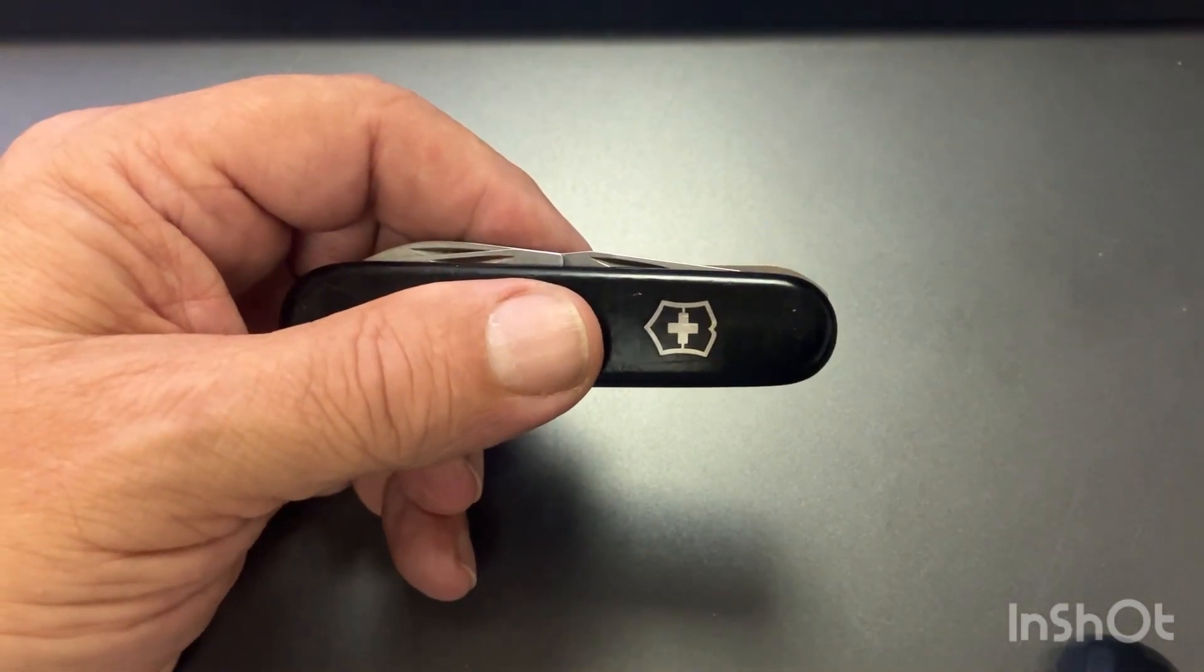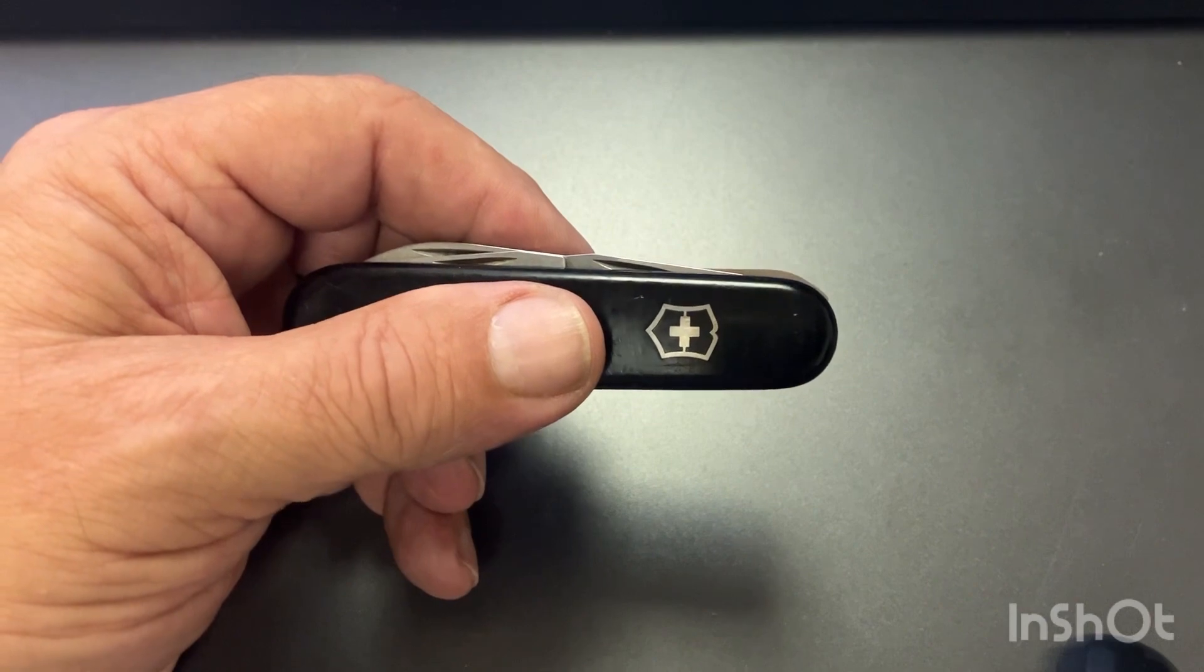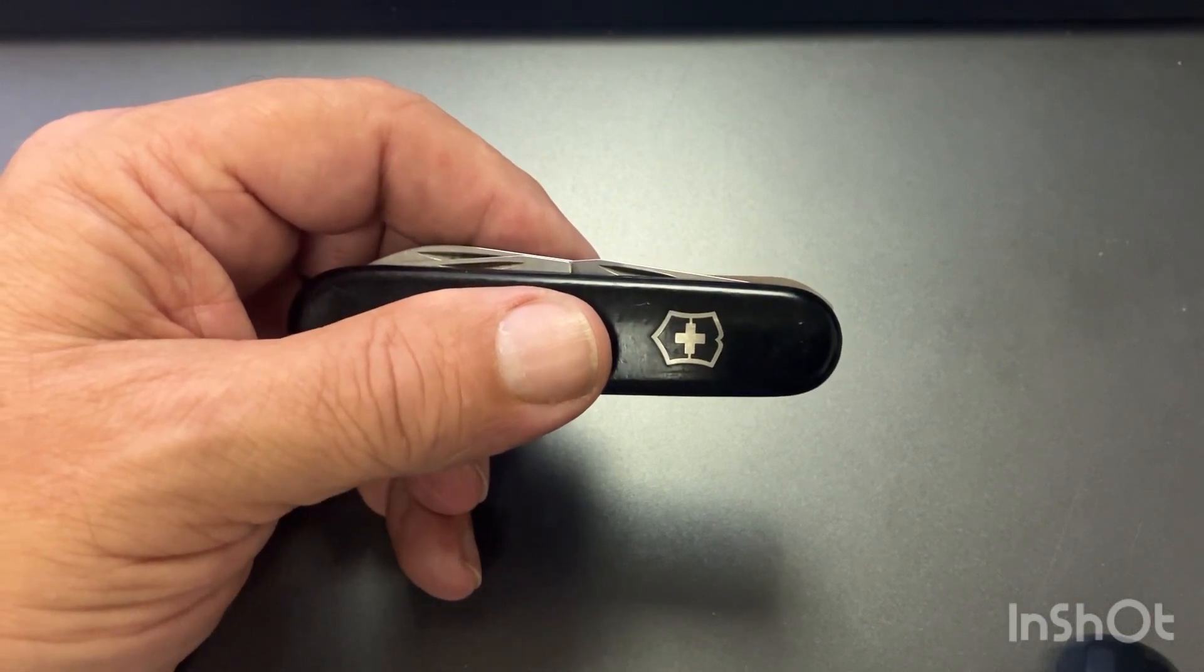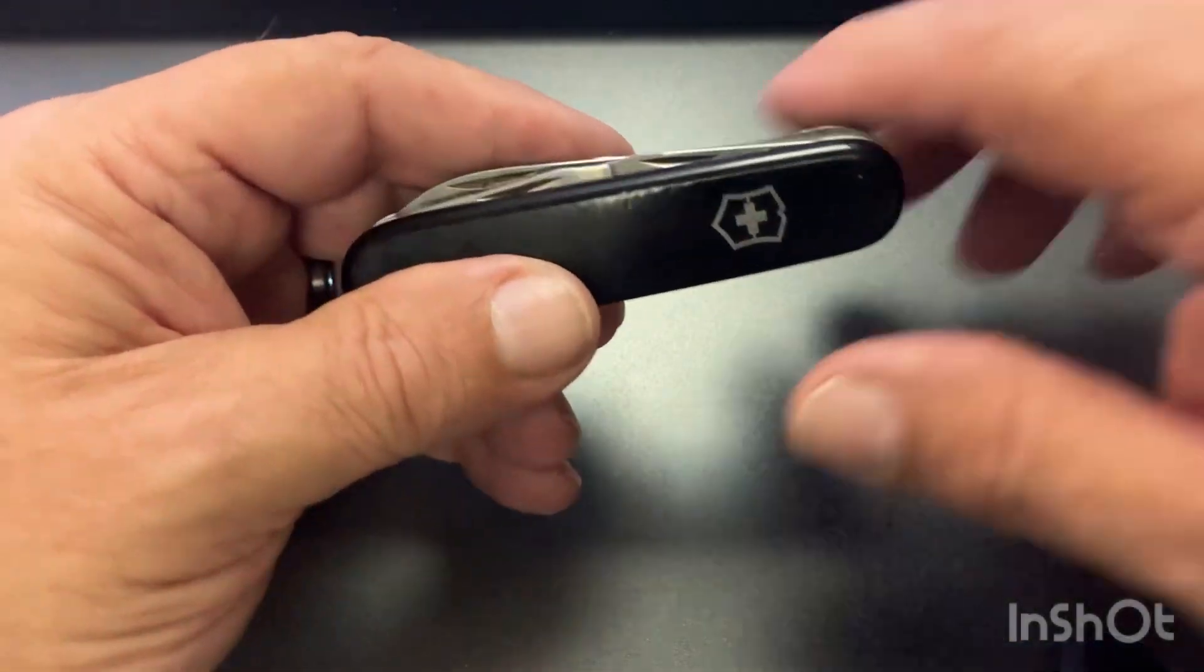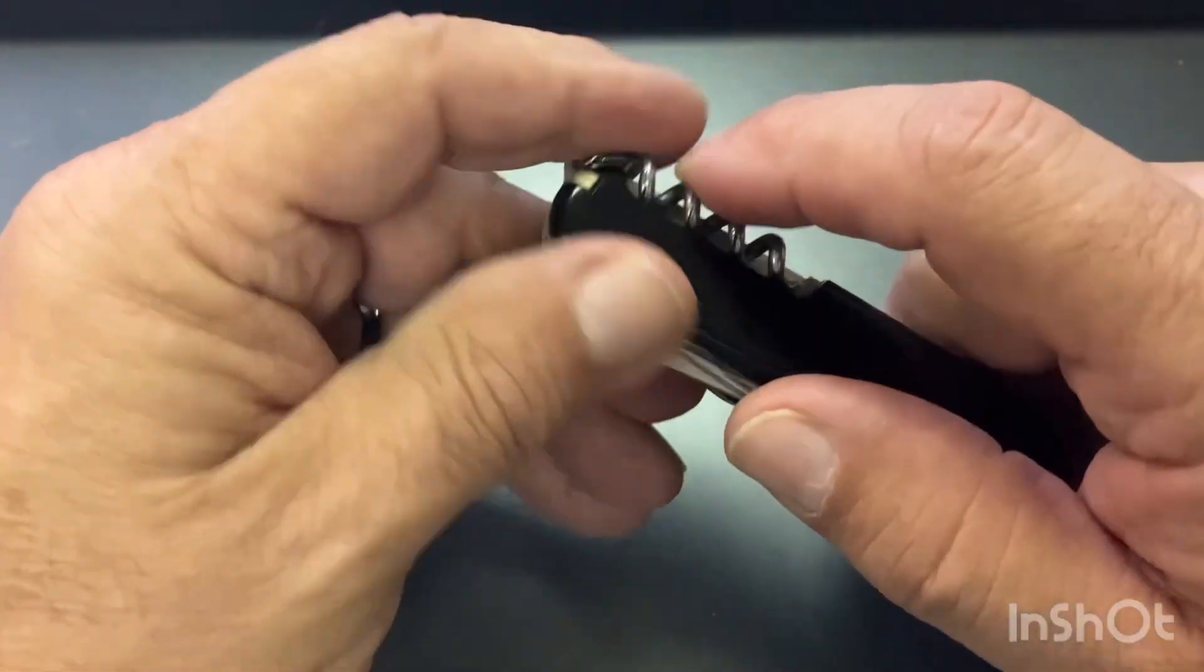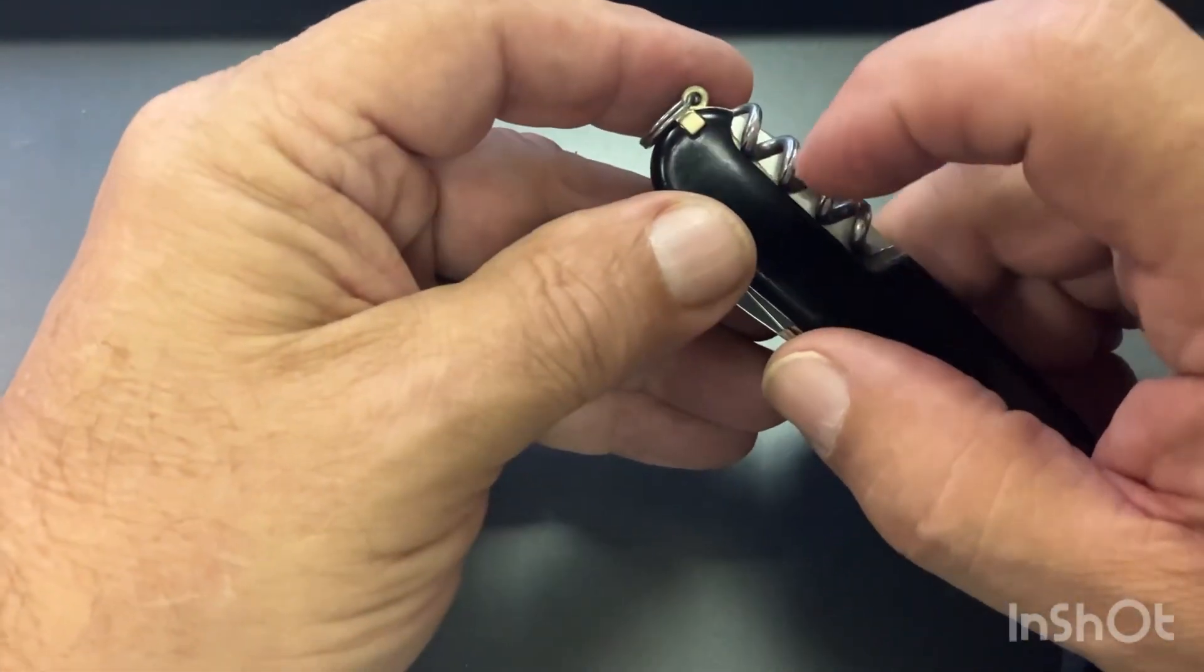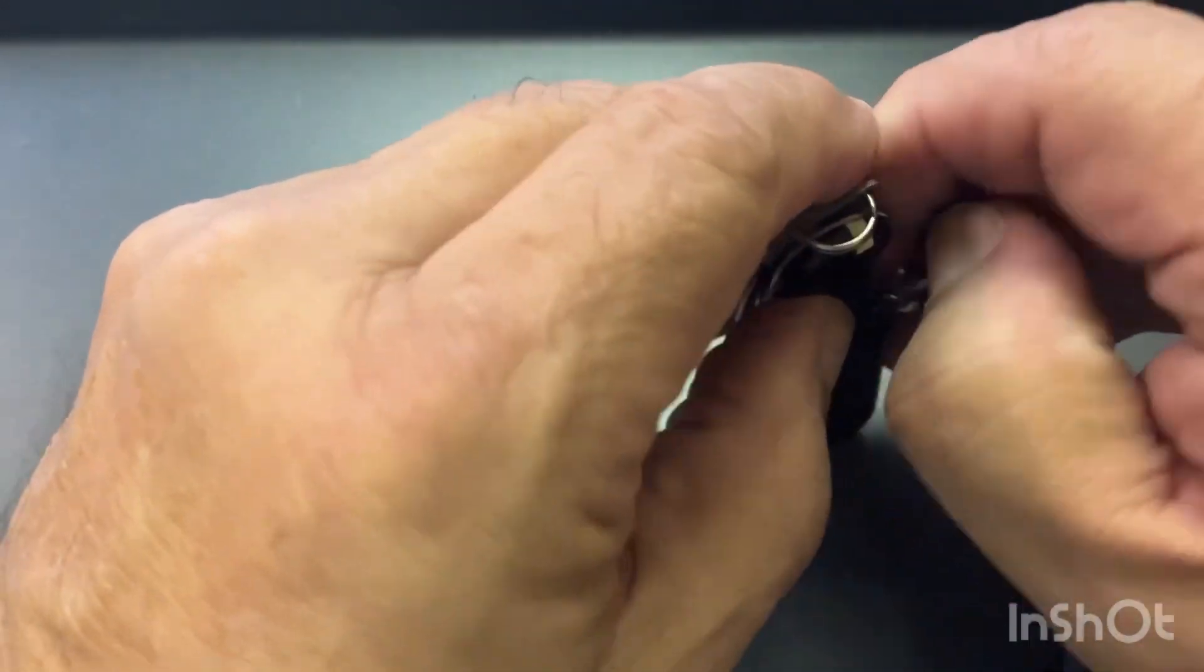Instead of having the corkscrew on the back, the Hiker would have a Phillips.